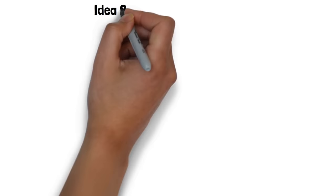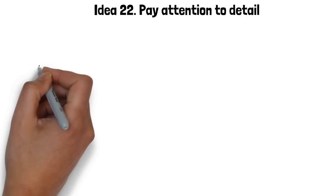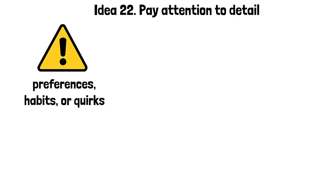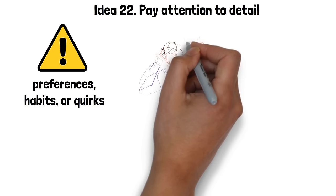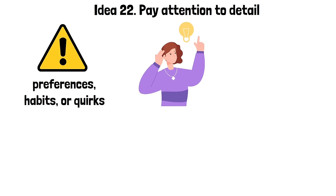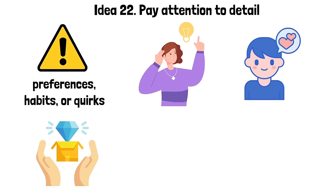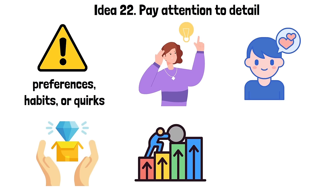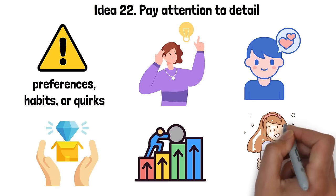Idea 22. Pay attention to detail. Paying attention to detail is an integral part of seduction. It involves noticing and appreciating the small things about the other person, such as their preferences, habits, or quirks. This could be remembering their favorite food, noticing when they change their hairstyle, or even appreciating their unique way of thinking or doing things. Paying attention to these details shows that you genuinely care and are truly interested in them. It also allows you to personalize your interactions, making them feel special and valued. Moreover, it aids in creating a deeper connection, as it indicates that you're willing to invest time and effort into understanding them better. This level of attentiveness can make the other person feel appreciated and understood, enhancing your appeal.